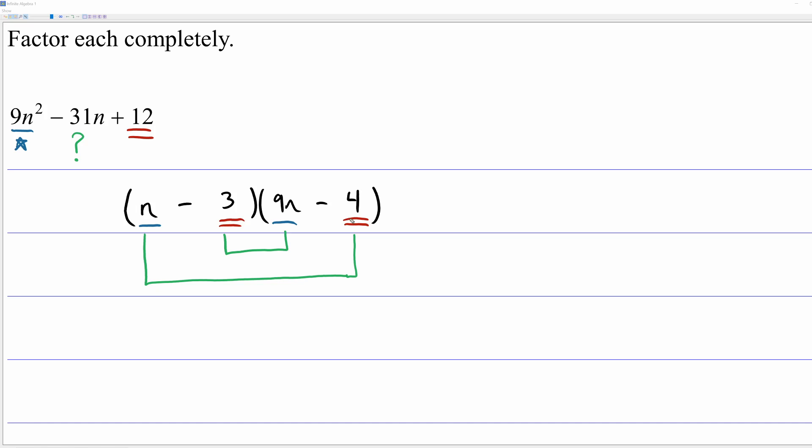Now realize, you can do some logical thinking along the way. You know that the two red blanks have to multiply to give you positive 12. Well, that means either both of these numbers are negative, or both of these numbers are positive, because that's the only way you can multiply to get a positive. However, when you combine the outside and the inside terms, you have to get negative 31n. So if you need to get negative n's, and these two blanks are either both positive or both negative, well, you know they both have to be negative.